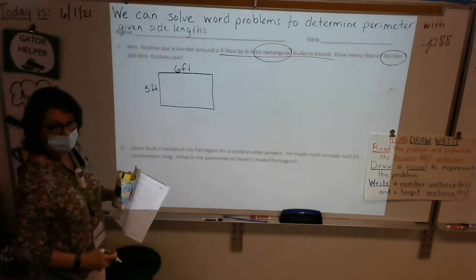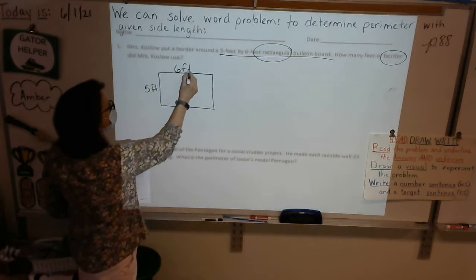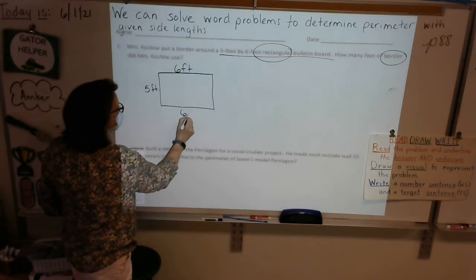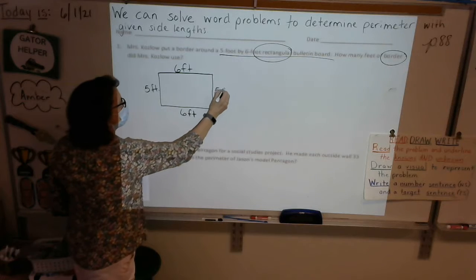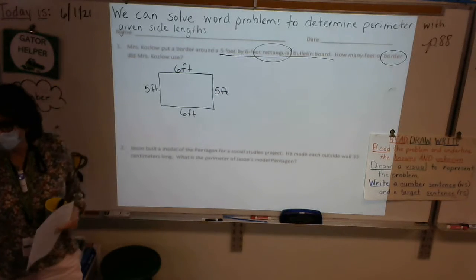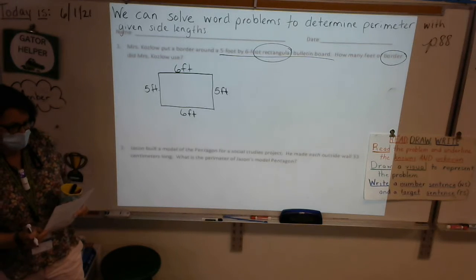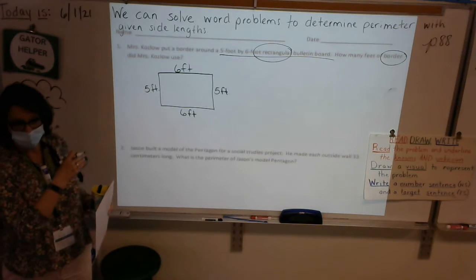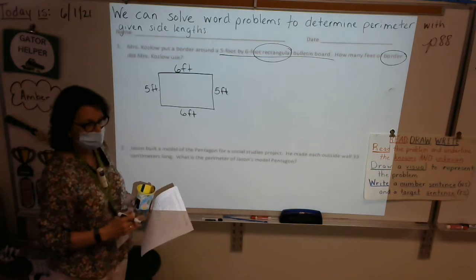And then we know, because we know the attributes of rectangles, that if this side is 6 feet, then this side is also 6 feet. If this side is 5 feet, then this side is also 5 feet, because opposite sides of the rectangle are equal. Okay? So we have our picture. This is the bulletin board, and this is the border around the bulletin board.